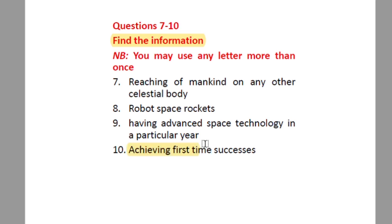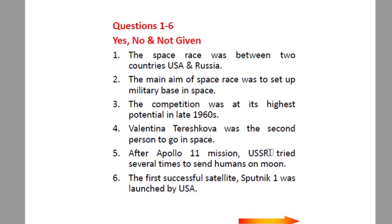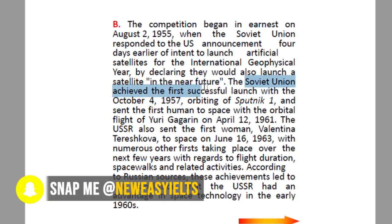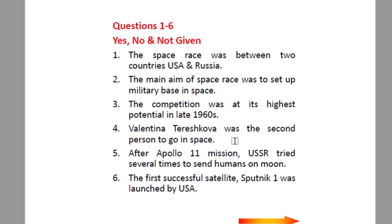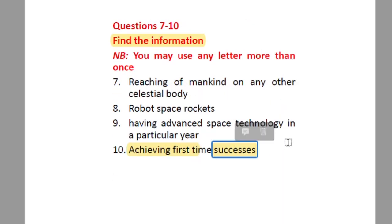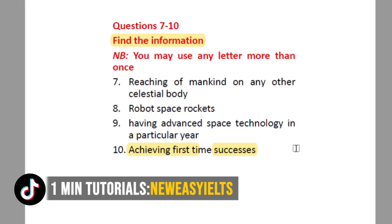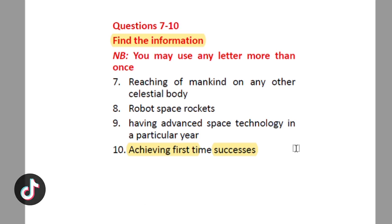Question ten: 'Achieving first-time successes.' In paragraph B: 'The Soviet Union achieved the first successful launch with the orbiting of Sputnik 1, then the first human to space, then the first woman to space, and numerous other firsts taking place over the next few years.' These were all first-time achievements, so the answer is paragraph B. This is how you tackle True/False/Not Given, Yes/No/Not Given, and Find the Information questions by selecting keywords.